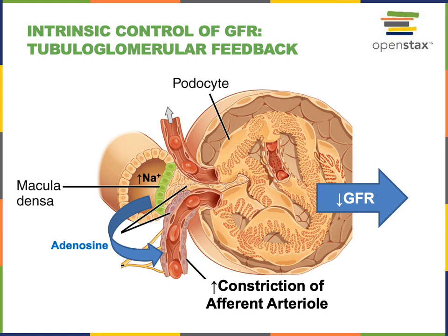Both an elevated flow rate and elevated sodium concentration are detected by cells of the macula densa, which stimulates the release of the paracrine signal adenosine. Adenosine binds to receptors on the vascular smooth muscle surrounding the afferent arteriole, stimulating constriction of the afferent arteriole. This leads to increased resistance to blood flow through the afferent arteriole, lowering glomerular blood hydrostatic pressure, decreasing net filtration pressure, and resulting in a decrease in the glomerular filtration rate.